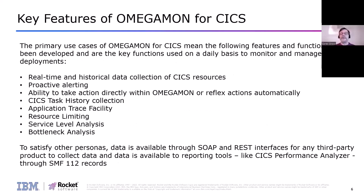The key features include real-time and historical data collection for CICS resources. One thing to note: customers typically collect SMF data and offload it in the evening, so to look at data you often have to go back to yesterday's data. Although if you use log streams you can look at data real-time, Omegamon makes it easier to quickly look at information for tasks that have just completed. There's proactive alerting to identify problems and take action to fix them. We'll also see some enhancements to resource limiting, service-level analysis, and bottleneck analysis.